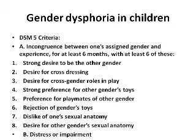Additional symptoms for gender dysphoria in children include rejection of one's gender's toys, dislike of one's sexual anatomy, and desire for the other gender's sexual anatomy — for example, if you're a boy you dislike your penis and would like to have a vagina. As with almost every other mental disorder, in order for this to be diagnosed it must cause distress or impairment. If the person doesn't feel part of their assigned gender but it doesn't cause distress, it's not considered a disorder.